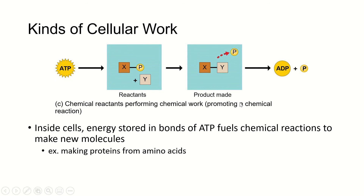ATP is also used for creating or breaking chemical bonds between other molecules or atoms. You might wonder: why make ATP and then use its energy to make some other molecule — why not just make that other molecule directly? That's because our cells can't do that; it's just beyond them. Just like we use gasoline to power cars, trucks, boats, and planes, cells use ATP. We can take the energy between the second and third phosphate, break it, and transfer that energy to create or break a bond between two other things.